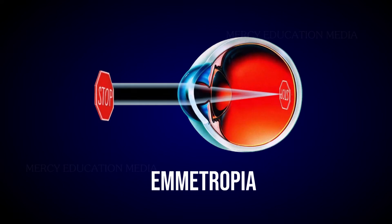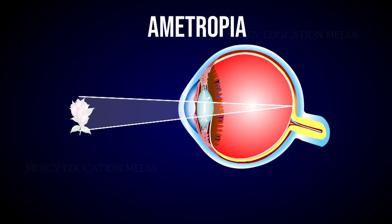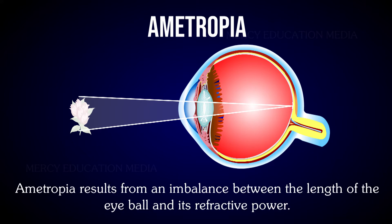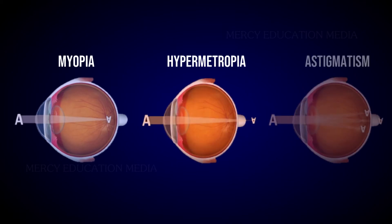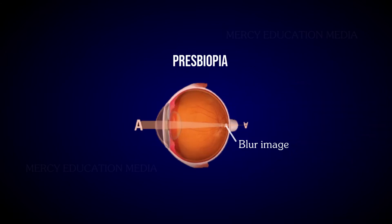The ideal refractive state is called emmetropia. A deviation from emmetropia is called ametropia. Ametropia results from an imbalance between the length of the eyeball and its refractive power. The important forms of ametropia are myopia, hypermetropia, astigmatism, and presbyopia.